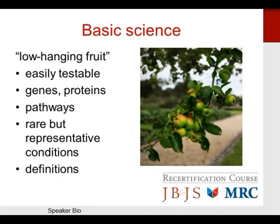I like to think that basic science is a low-hanging fruit of this test. It's very easily testable — a lot of genes and proteins, pathways, several rare but representative conditions that are easily testable, as well as definitions.